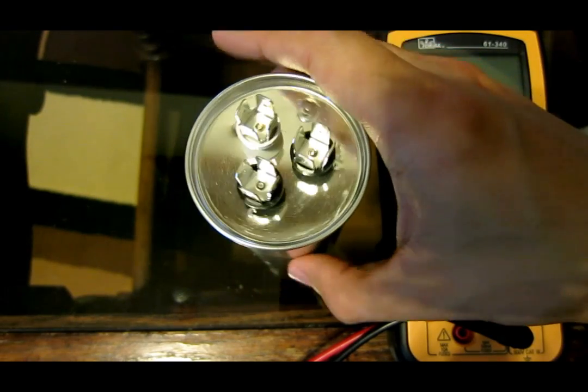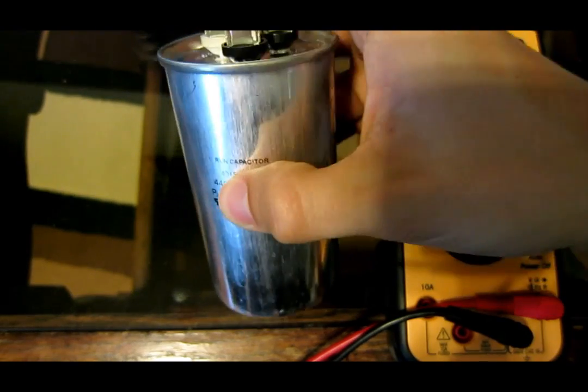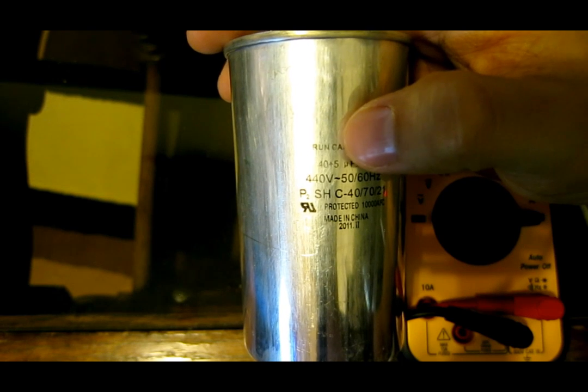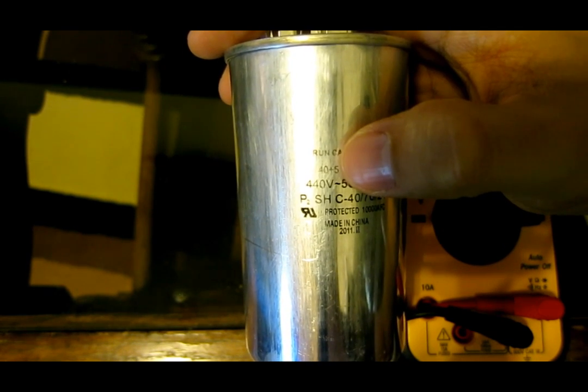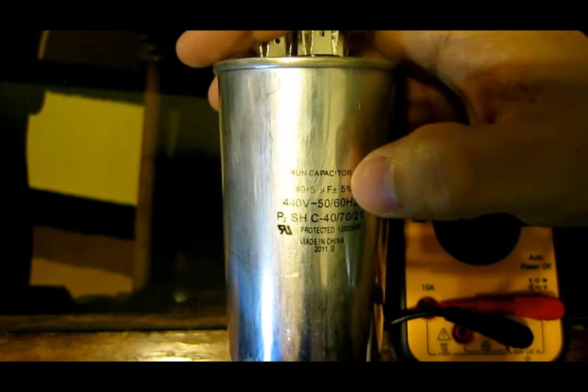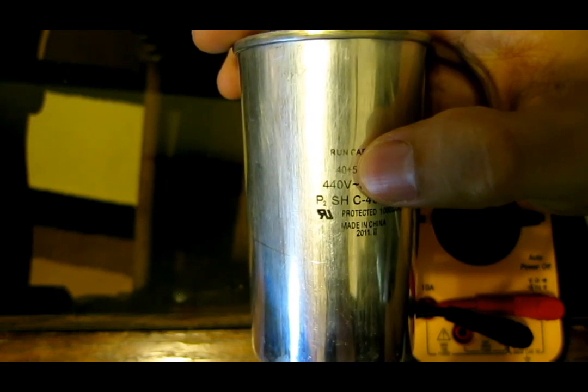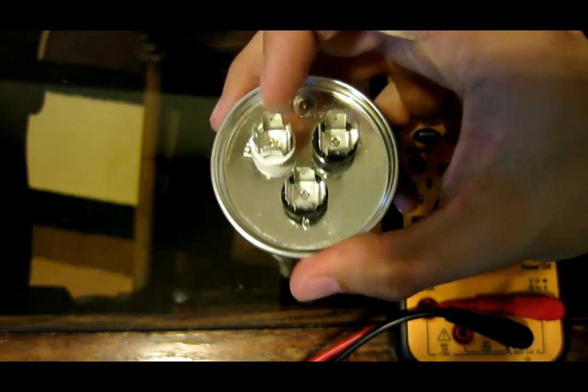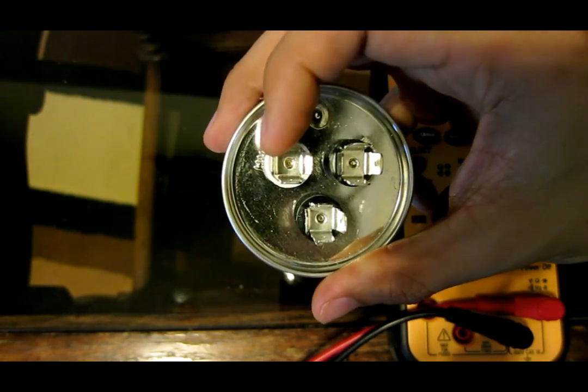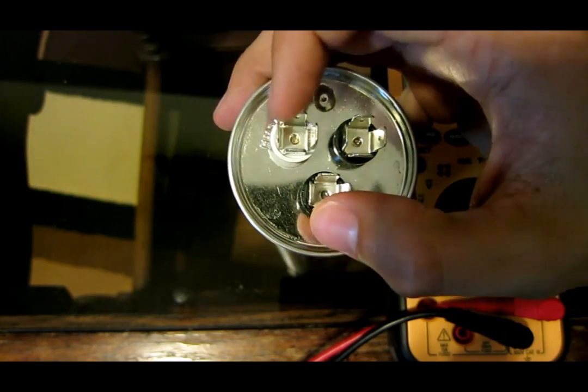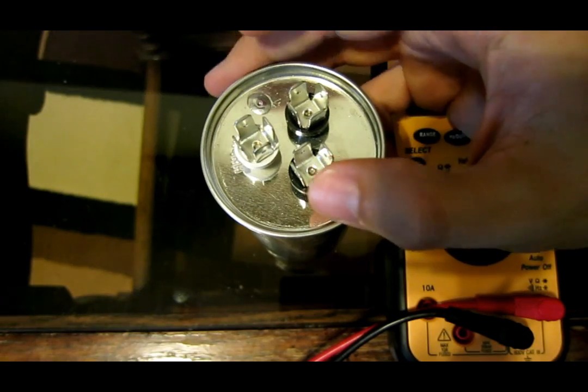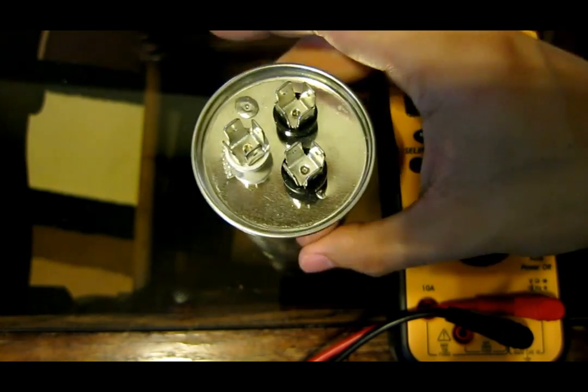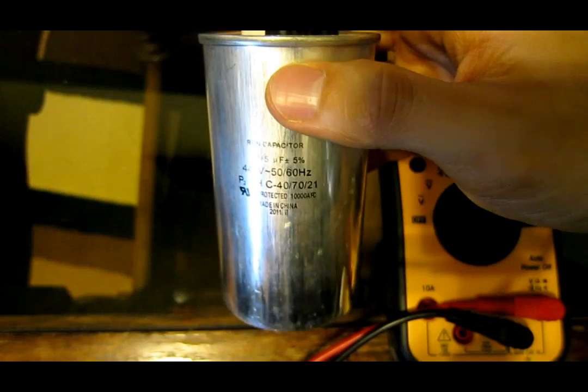Whenever you buy these run capacitors, you want to get the correct capacitance. Right here, you can see, right there, it says 40 plus 5. It doesn't mean 40 add 5, it means 40 and 5. That's microfarad. It's 40 microfarad and 5 microfarad. The 40 goes between common and the compressor, hermetic, right here. These two, in a second when I measure it, should be 40 microfarads. And right here, from common to FAN, should be 5 microfarads. And it should be within 5% tolerance.